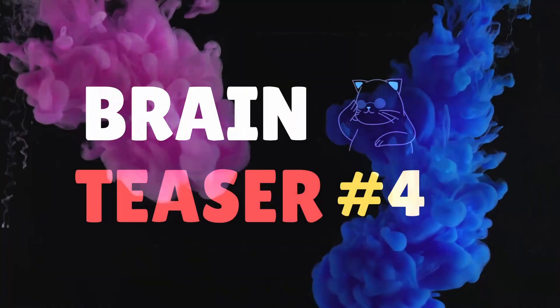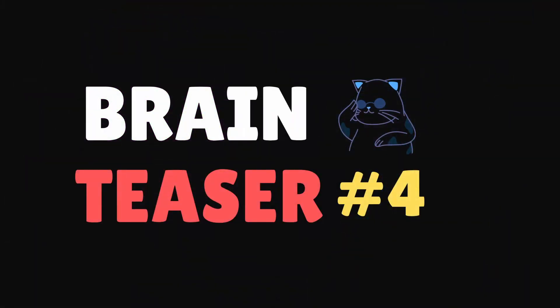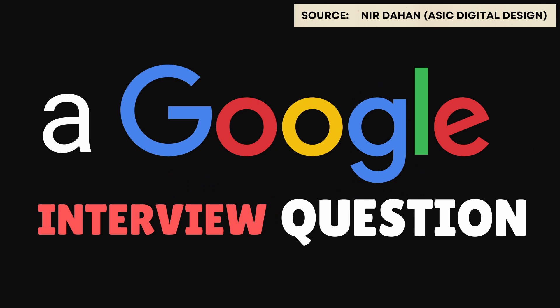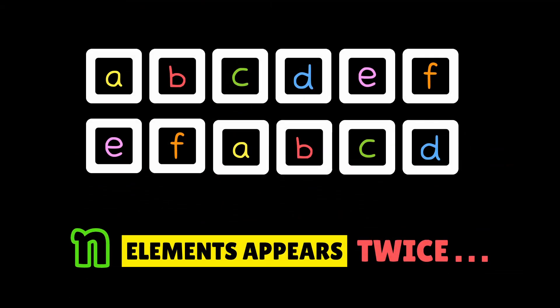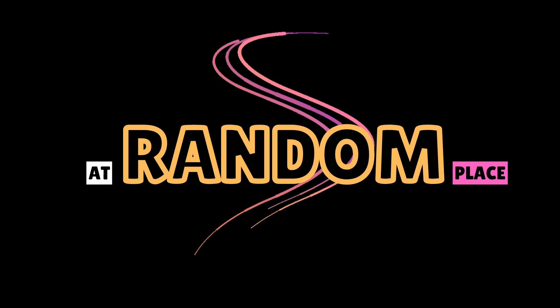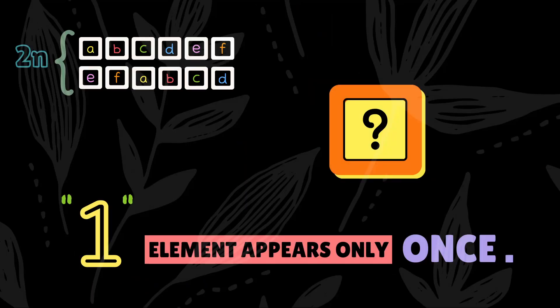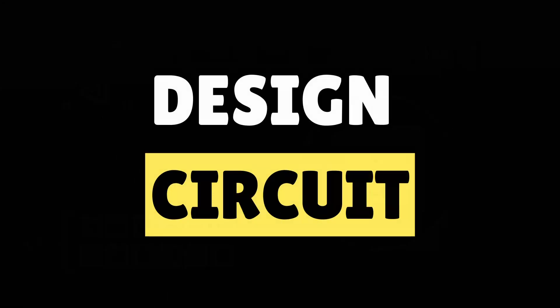Hey guys, welcome back to another interesting brain teaser video where you work and I sit back. Let's jump into the question. Given an array with 2n+1 integer elements, where n elements appear twice at different places in the array and a single element appears only once somewhere inside, we need to design a circuit to find the value that appears only once.